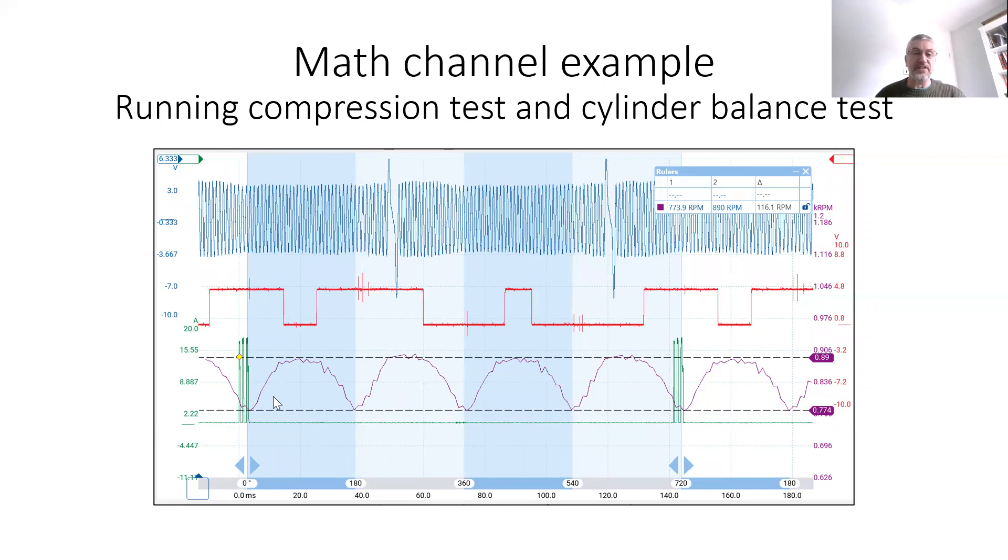Likewise, the balance test. We can see as the injector fires here at TDC, we can see that the rate of the crankshaft speed increases. And then 180 on, we can see cylinder three fires and so forth. And we can see the maximum engine speed as each injector fires are very similar. So this shows the power output for each cylinder is about the same.